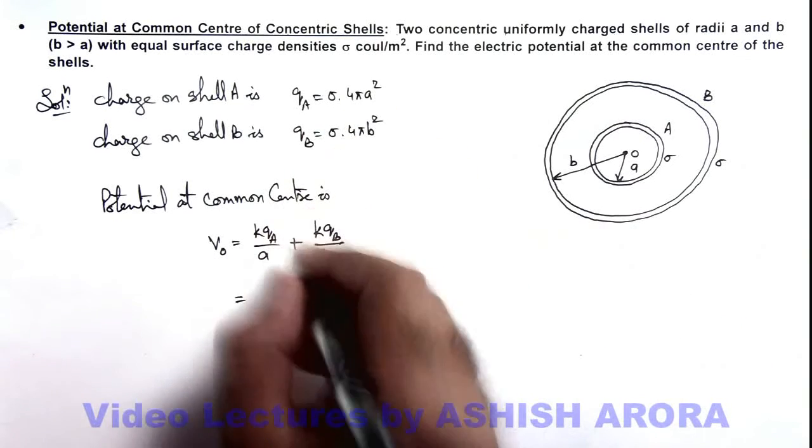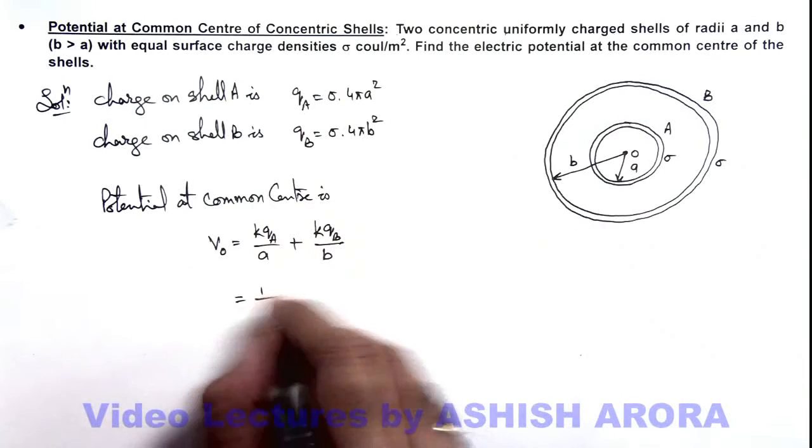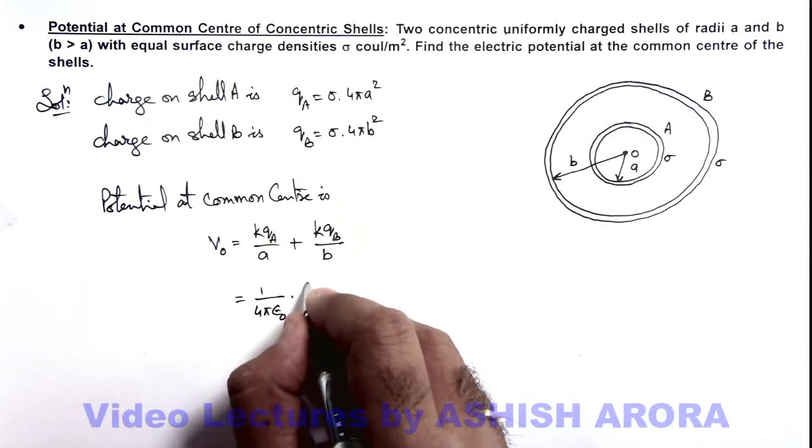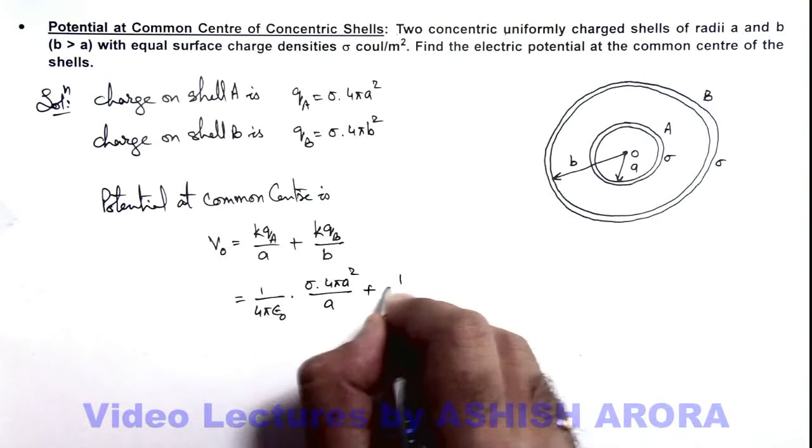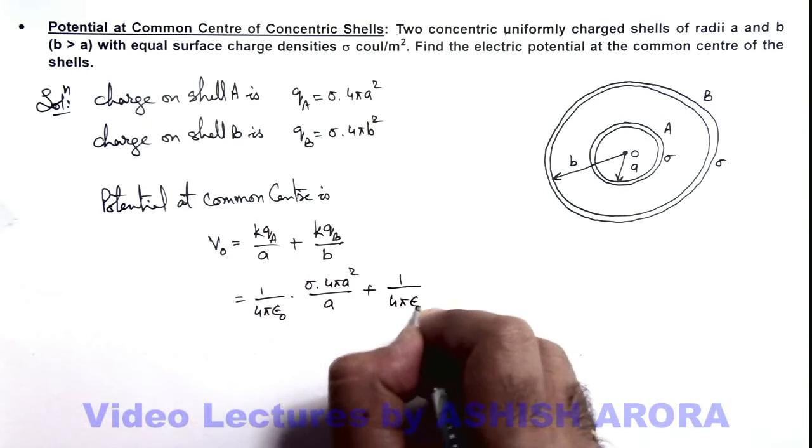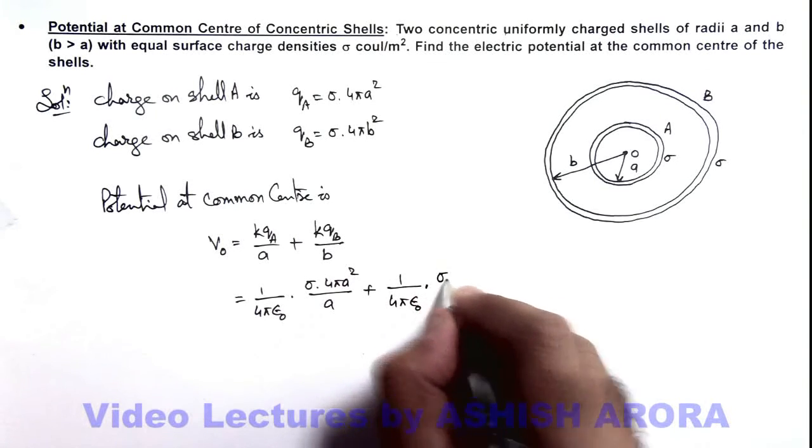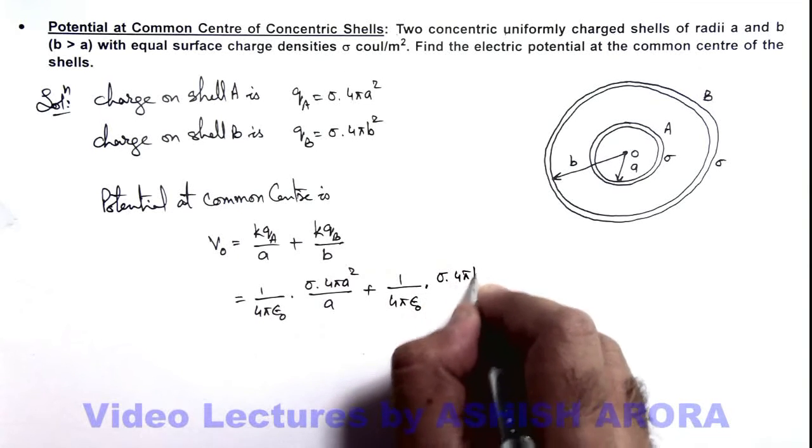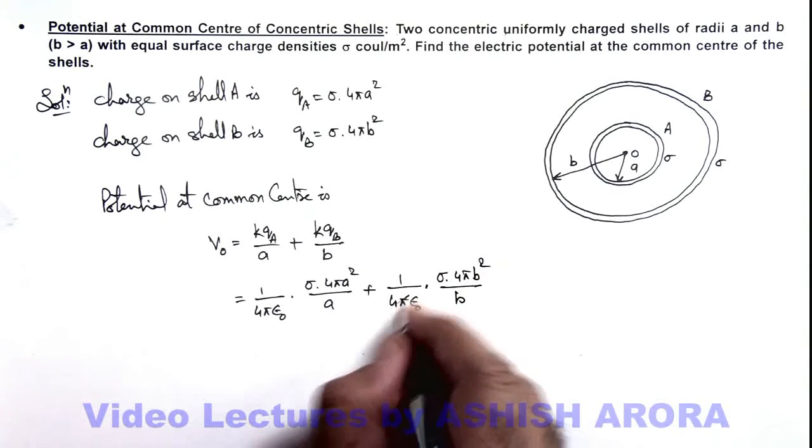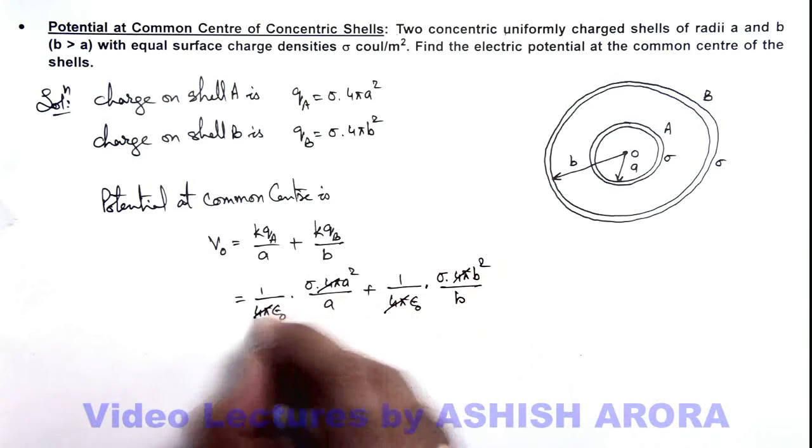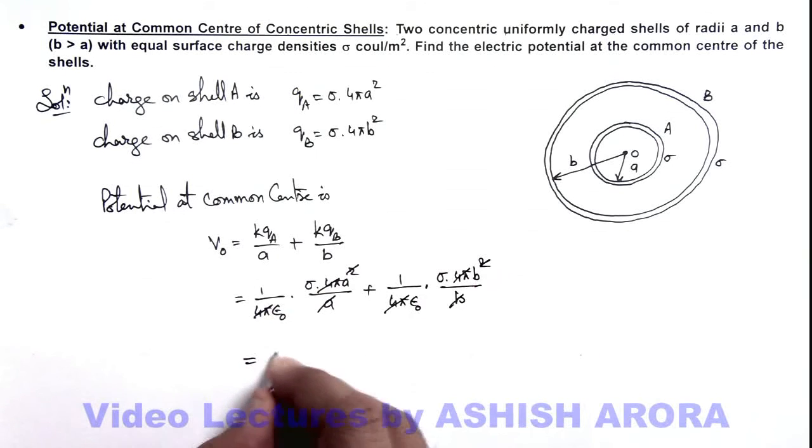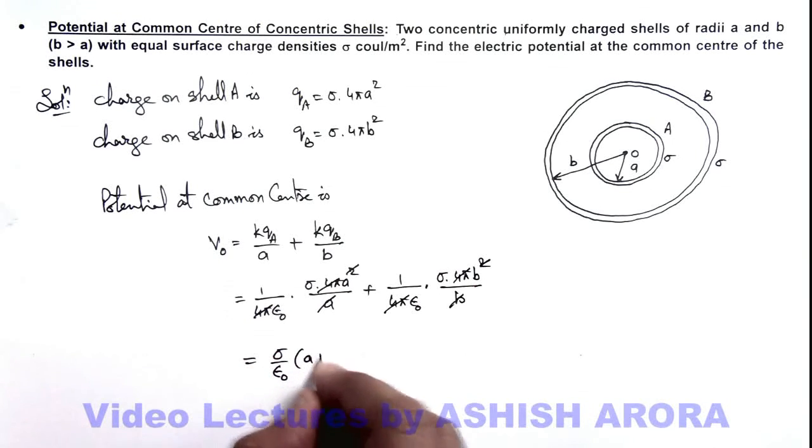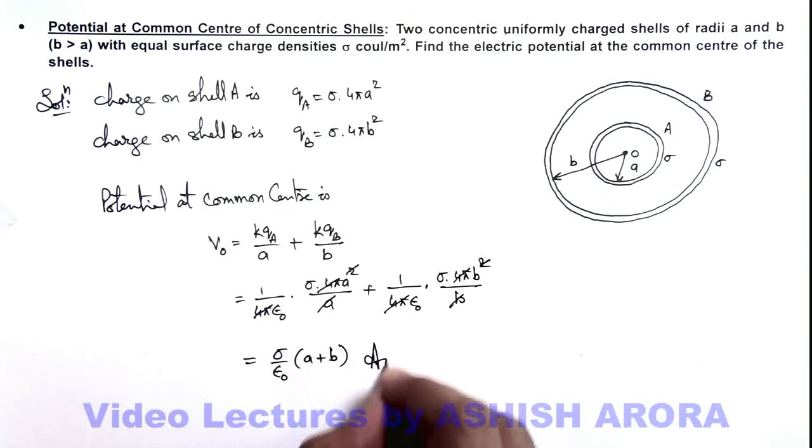And here we can substitute the value of q_a and q_b. So this will be k is 1 by 4πε₀ multiplied by q_a is sigma into 4πa² divided by a, plus 1 by 4πε₀ multiplied by sigma multiplied by 4πb² by b. So here this 4π gets cancelled out, and this one a and one b also gets cancelled out. So finally this is given as sigma by ε₀ multiplied by a plus b. That is the answer to this equation.